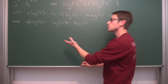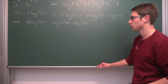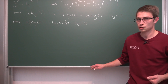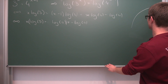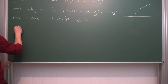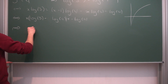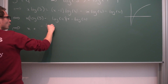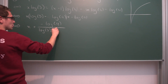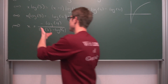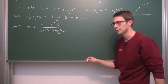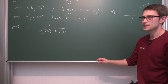We can factor out the x, giving us x times (log of 3 minus log of 4) equals negative log of 4. Now we divide by the coefficient of x to solve for x. We can divide both sides because it's not equal to zero — log of 3 is not equal to log of 4 because the logarithm is strictly increasing. So our final answer is x equals negative log of 4 divided by (log of 3 minus log of 4). You can simplify further since 4 is 2 squared, but this right here is the solution. Pretty cool, right?